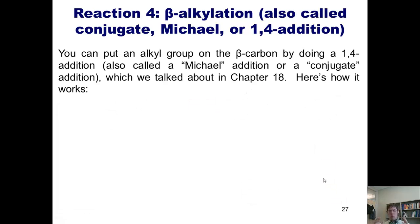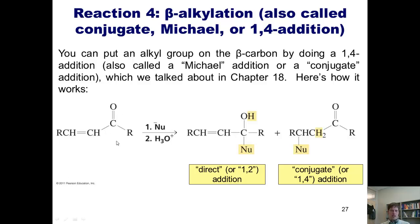If I want to alkylate at the beta position rather than the alpha position, I can put an alkyl group on the beta carbon by doing a 1,4-addition, also called a Michael addition or conjugate addition, which we talked about in Chapter 18. I need to begin with a ketone, aldehyde, or similar species that has a double bond adjacent to the carbonyl carbon — an alpha-beta unsaturated ketone or aldehyde. A nucleophile can go to the carbonyl carbon (direct or 1,2-addition product) or to the beta position (conjugate or 1,4-addition product).